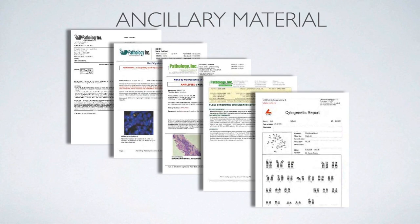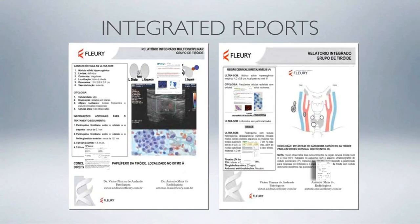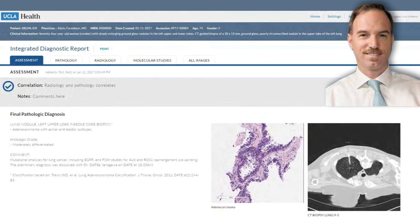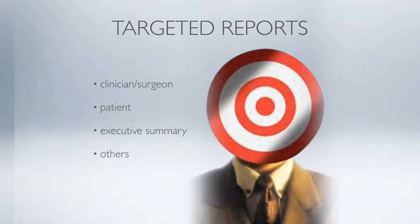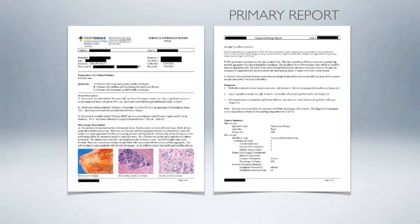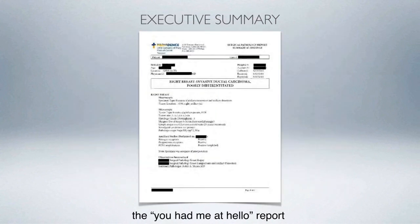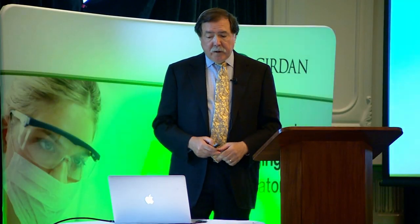We can personalize reports by integrating ancillary material — X-rays and other items — into a single report. There's a lab in Brazil with excellent integrated reports. We have organ-specific reports for GI, derm, and heme. We also have targeted reports: a primary report plus an executive summary with all the breast markers that a physician just needs to read on one page.